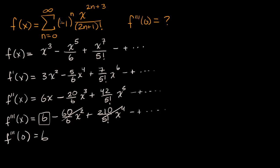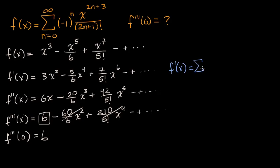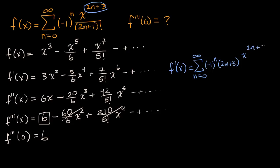Another way we could have tackled this is to keep it in sigma notation. F prime of x is equal to the sum from n equals zero to infinity. Taking the derivative with respect to x using the power rule, you bring the exponent two n plus three out front, giving negative one to the n times two n plus three times x to the two n plus two, over two n plus one factorial.